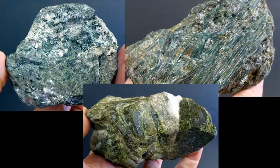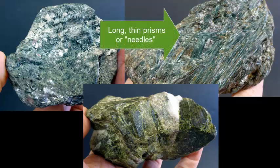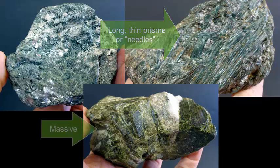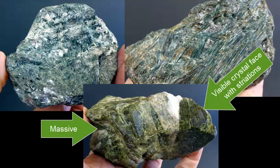Let's look more closely at their crystal form. This mineral grows in long, thin prisms or needles. This mineral is massive, with only one visible crystal face that shows striations — linear indentations along its surface. Those striations won't always be visible on crystal faces for this mineral, but they are common. The rest of the mineral just looks massive.